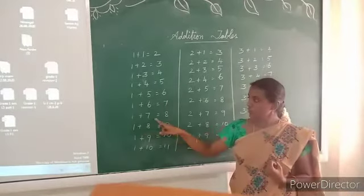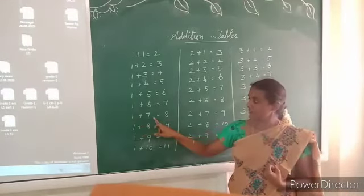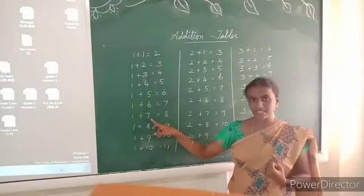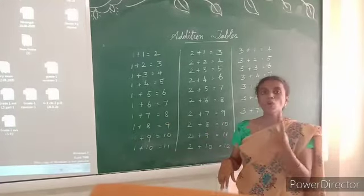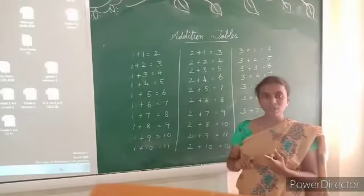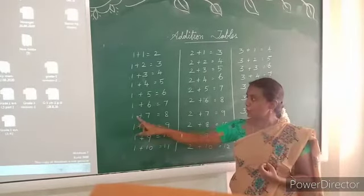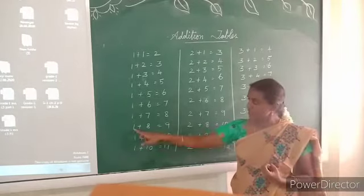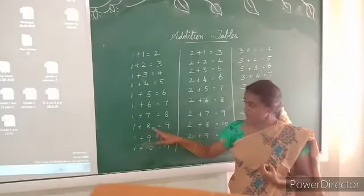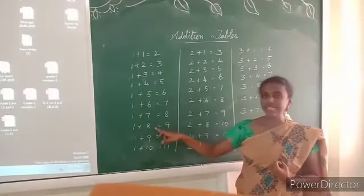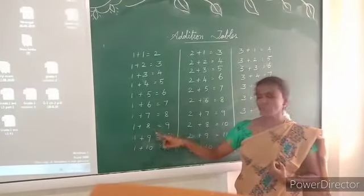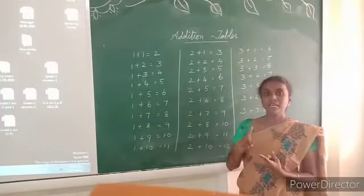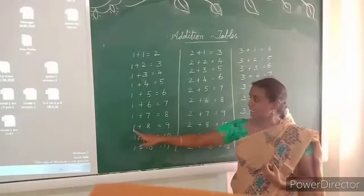See children, look at the next one: 1 plus 7. If you compare these 2 numbers, 7 is the greater number. 7 in the mind, 1 in the finger — 7 after 8. So 1 plus 7 is equal to 8. Look at the next one: 1 plus 8. If you compare these 2 numbers, 8 is the greater number. So 8 in the mind, 1 in the finger — 8 after 9. So 1 plus 8 equals 9.